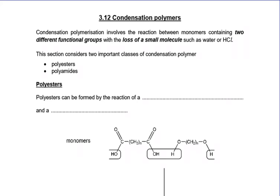In this video we are going to introduce a new type of polymerisation called condensation polymerisation. If you've forgotten about addition polymers, which we met in the first year of the course, perhaps you should go back and review addition polymers. Condensation polymers fall into two types: polyesters and polyamides. The difference is that we're going to lose a small molecule - such as water, which is where the name comes from, or hydrochloric acid - when we form the polymer. We're going to start by looking at polyesters.